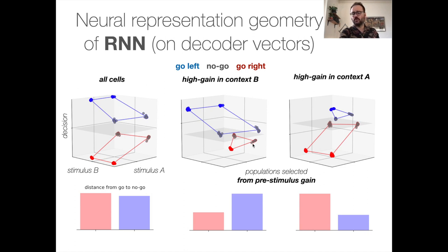We can also quantify this gain modulation by computing the distance between the go trials and the no-go trials on each of these axes. We see there is no difference when you look at all the network together. But if we look at these populations, we see that there is a clear gain modulation for each of these contexts and population.